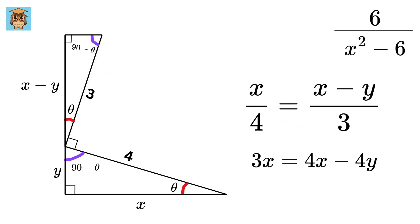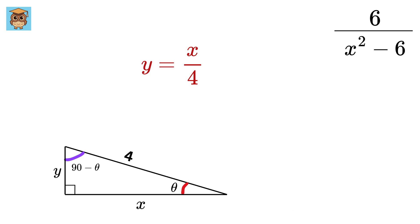Cross-multiply to get this, and then take 4Y this side, and 3X this side, to get Y equals X over 4. Amazing! Now, consider this triangle.